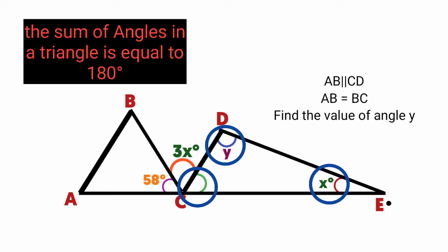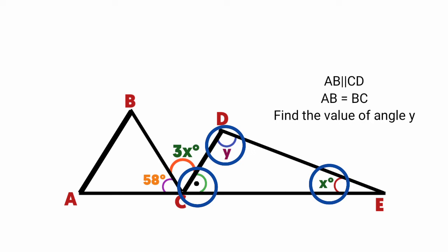Let's name this angle here angle Z. From the equation, x plus y plus z is equal to 180 degrees. Let's keep the equation aside. We are to find the value of Y, but what is the value of X? We don't know. What is the value of Z?